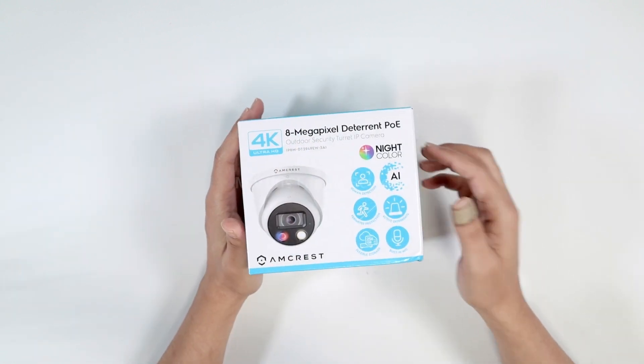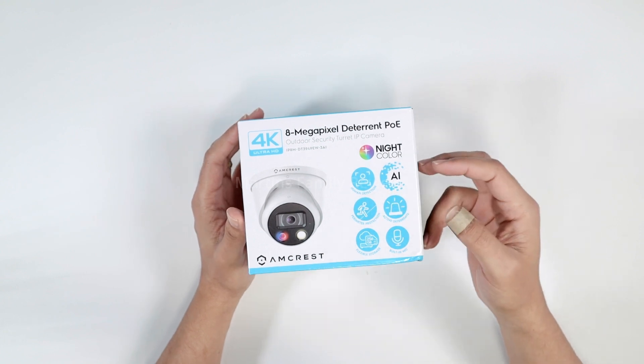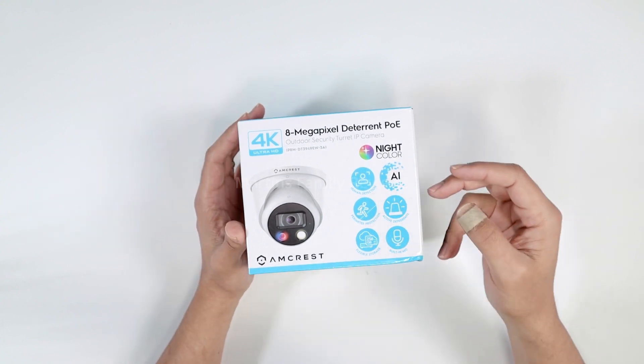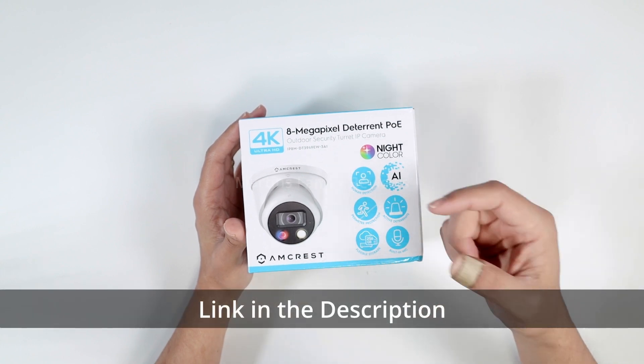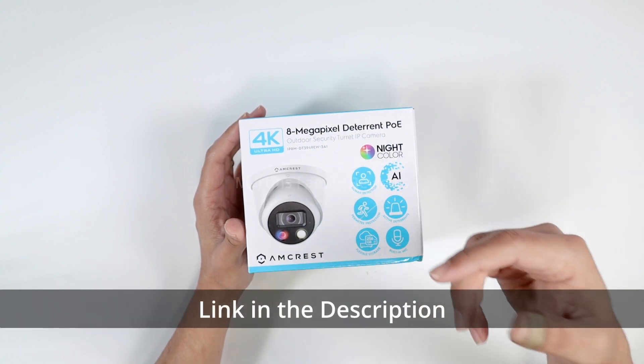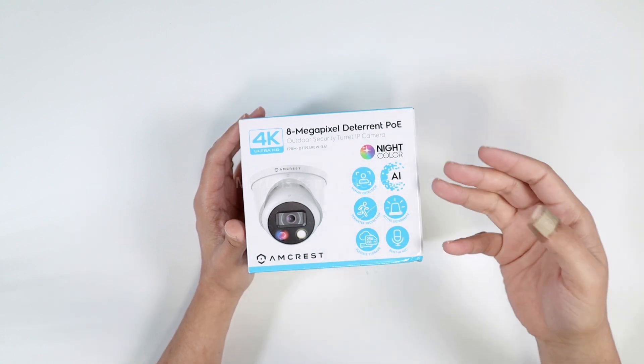And also has some AI. You can have, for example, human detection, perimeter protections, active deterrents, and also has flexible storage, which means you can record to a SD card, you can record to the cloud, and also to a computer or to a NVR, which is a network video recorder.